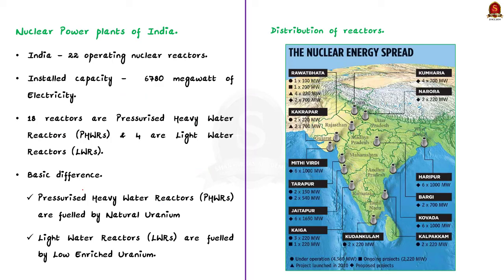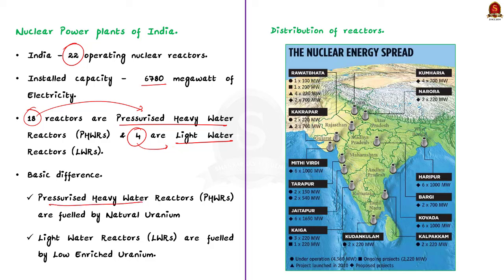Now let us see India's nuclear power plants from a prelims perspective. India has 22 operating nuclear power reactors with an installed capacity of 6,780 MW. Out of these 22 reactors, 18 are pressurized heavy water reactors and 4 are light water reactors. Pressurized heavy water reactors are fueled by natural uranium, while light water reactors are fueled by low-enriched uranium. The oldest nuclear power reactor is the Tarapur nuclear reactor in Maharashtra, started in 1969, which has two boiling water reactors and two pressurized heavy water reactors. This is the second most powerful reactor in India.